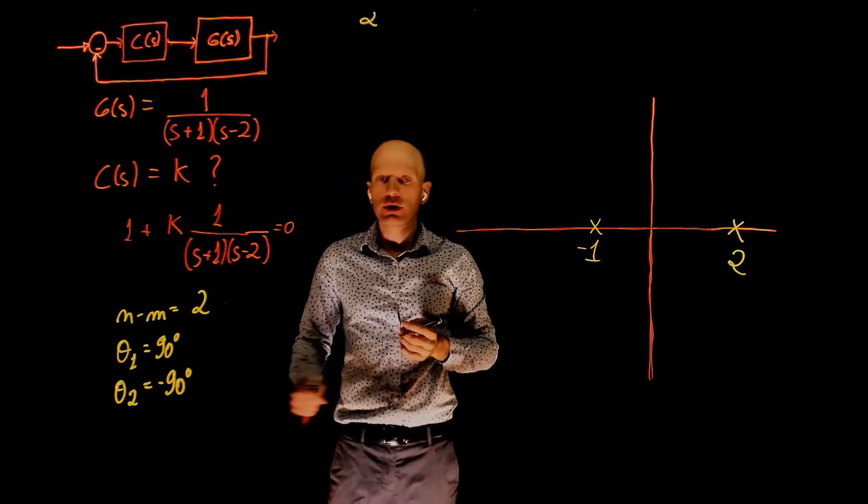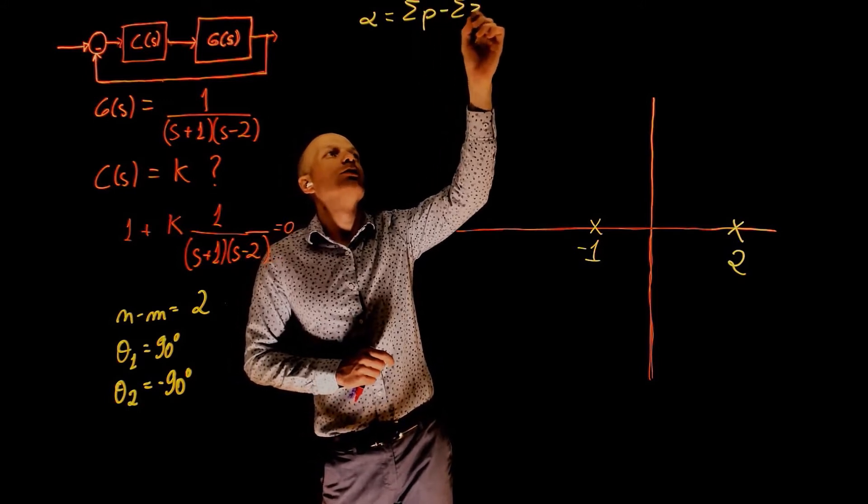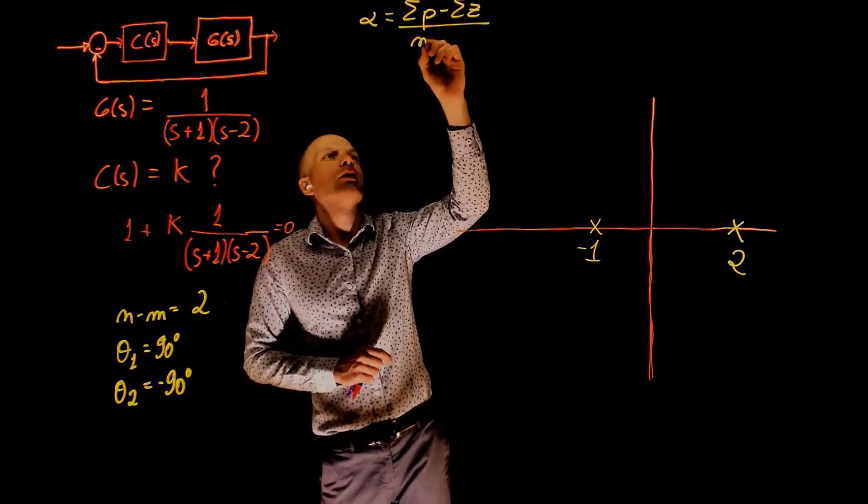Where is the centroid of these asymptotes? That's what we call alpha, as the sum of poles minus the sum of zeros, divided by N minus M.